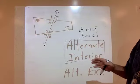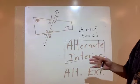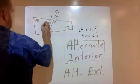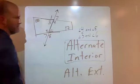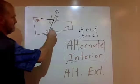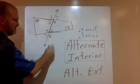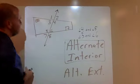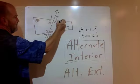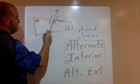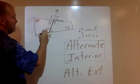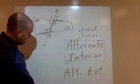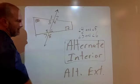Here's a trick for recognizing alternate interior angles — look for a Z. The alternate interior angles are always in the corners of the Z. You can draw your Z backwards, sideways, upside down, or stretched out. So you can look for the letter Z and the alternate interior angles will be in the corners of that Z.